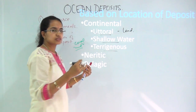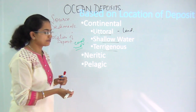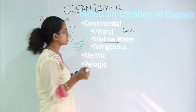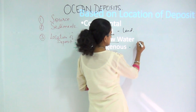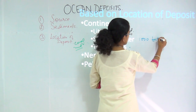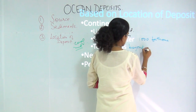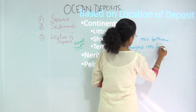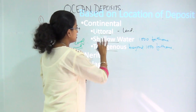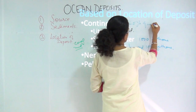Then you have the shallow waters, which are very immediate to the littoral zone. Finally, you have the terrigenous region, which is beyond 1,000 fathoms. So up to 1,000 fathoms is shallow, and beyond 1,000 fathoms is terrigenous. This continental deposit constitutes around 60% of quartz deposits.